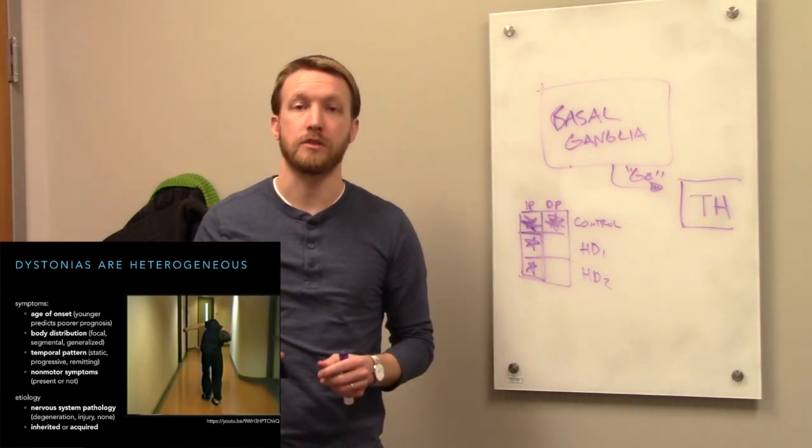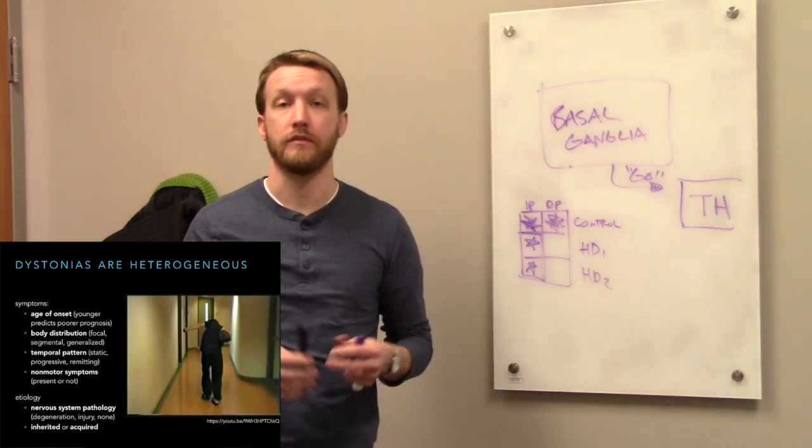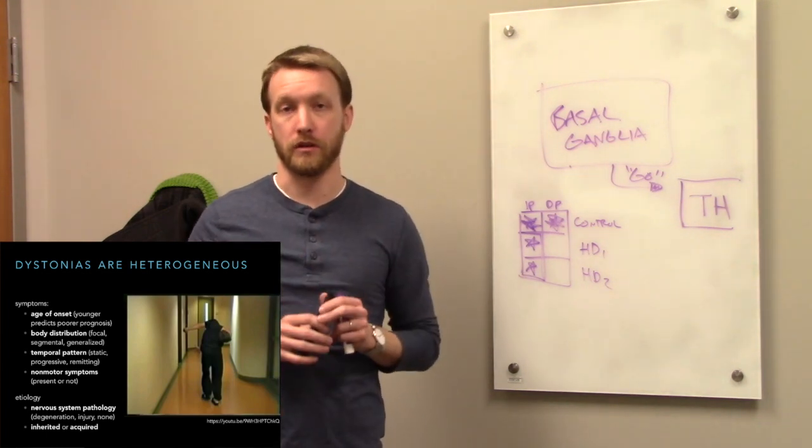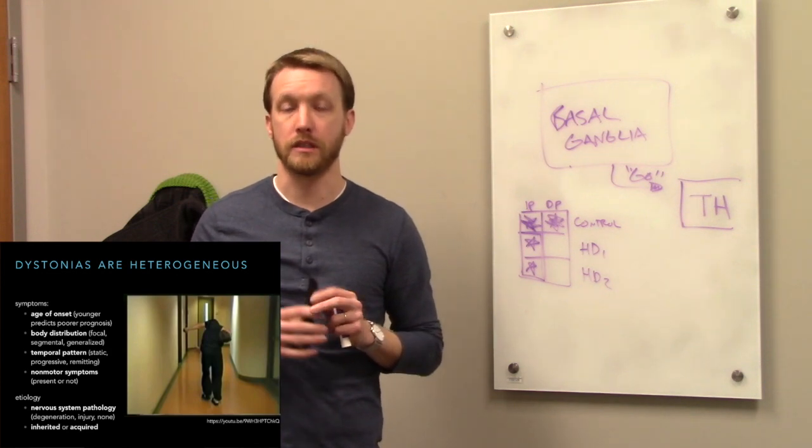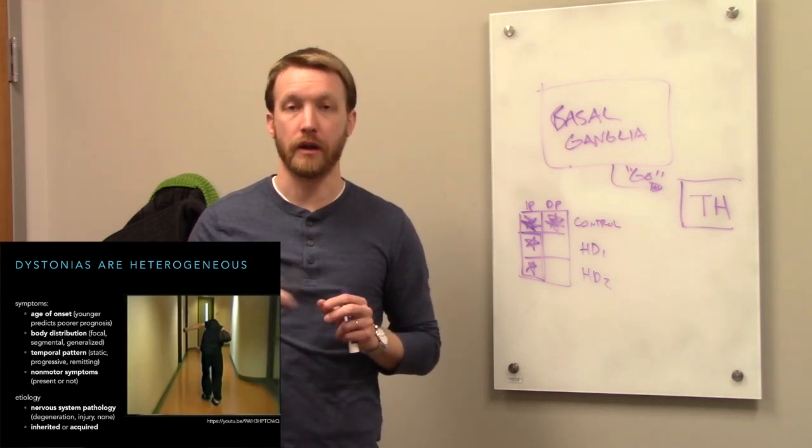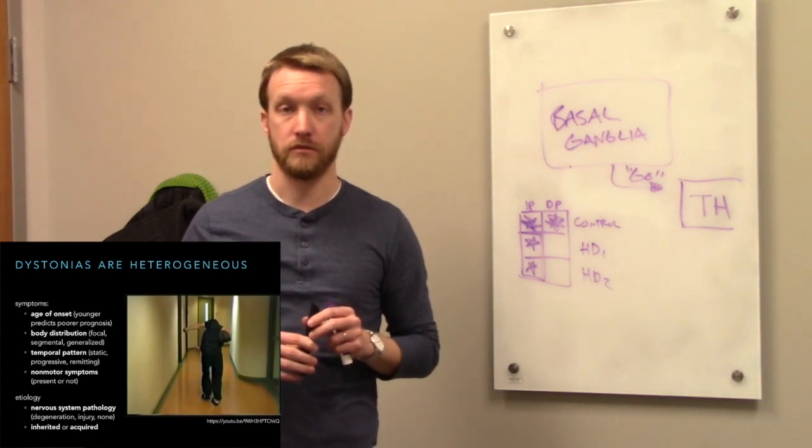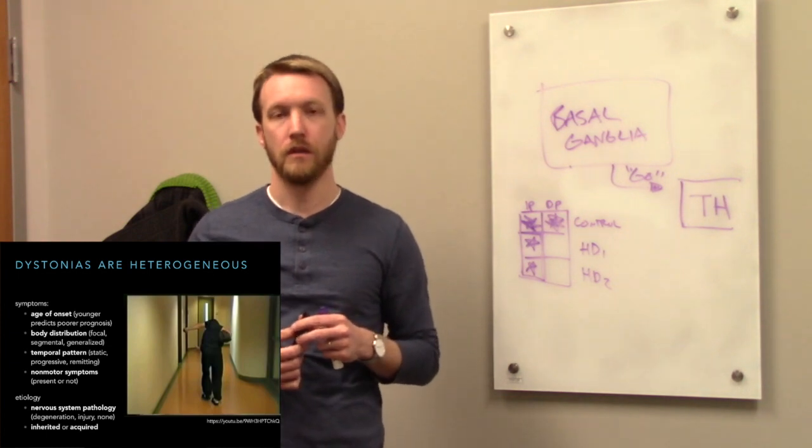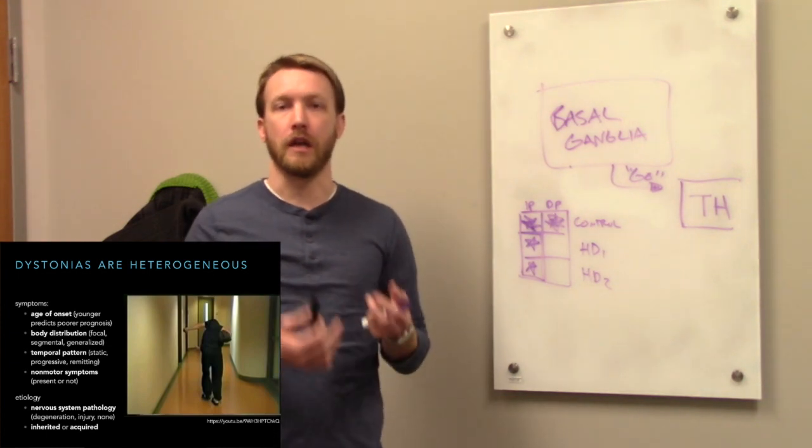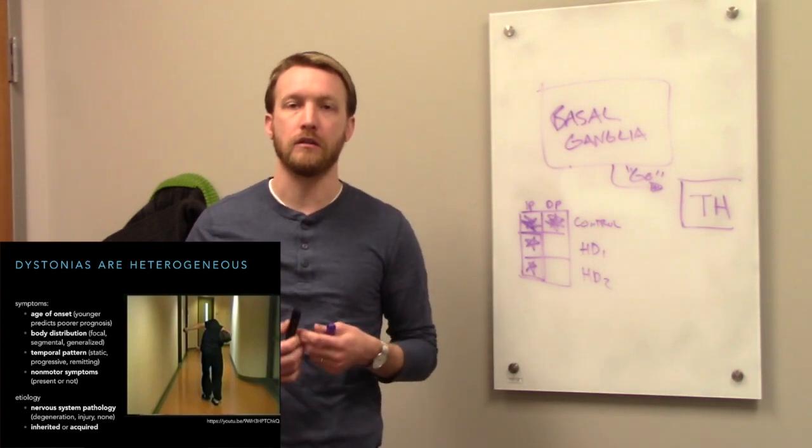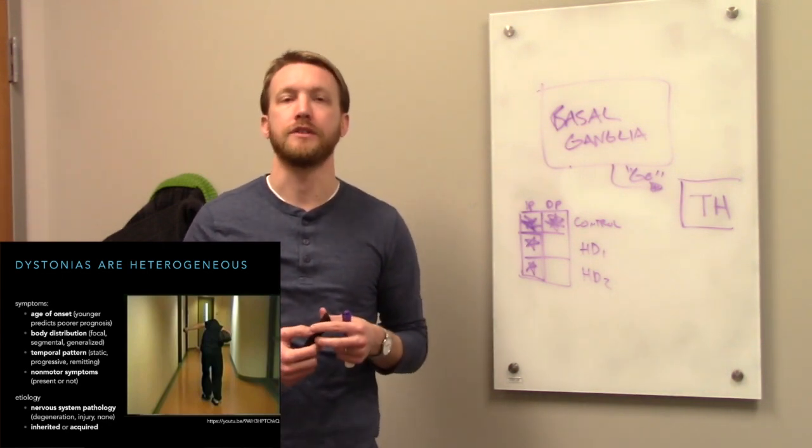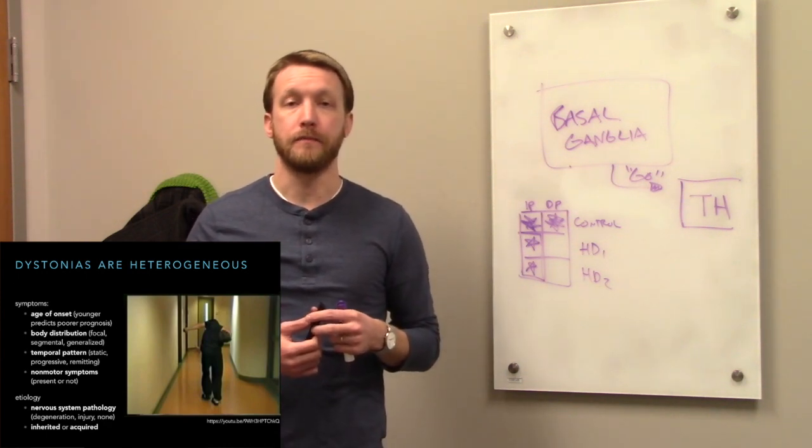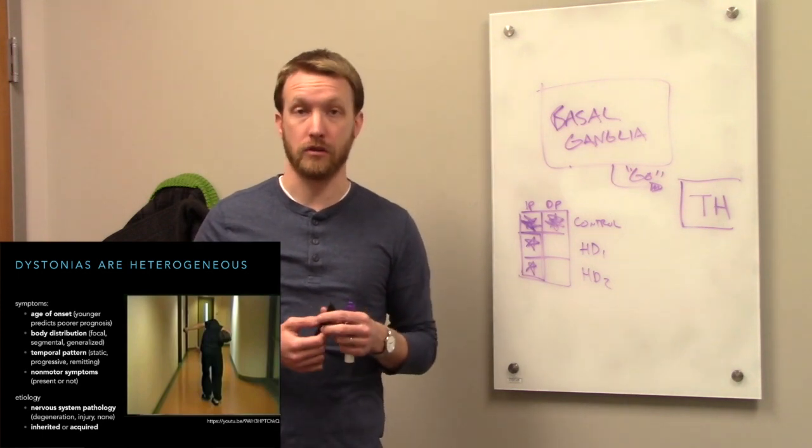The age of onset is very much related to how severe of a case we're dealing with. In general, the earlier the onset, the poorer the prognosis. For example, adult onset cases of dystonia are rarely going to be generalized. So they'll be typically focal cases of dystonia. Most commonly, dystonias are inherited. But there are some sporadic or acquired cases of dystonia. They can be caused by neurodegeneration. They can be caused by traumatic injury. Or there might be no clear cause.